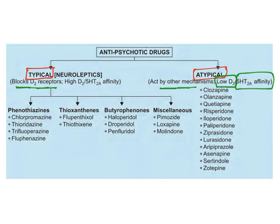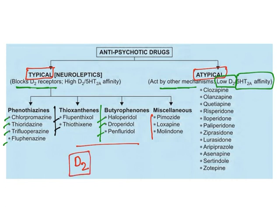Typical antipsychotics are classified as: phenothiazines — chlorpromazine, thioridazine, trifluoperazine, fluphenazine; thioxanthines — flupenthixol, thiothixene; butyrophenones — haloperidol, droperidol, penfluridol; and miscellaneous drugs — pimozide, loxapine, molindone. All these drugs block the D2 receptor, so their action is based on the dopamine hypothesis — hence they are known as typical antipsychotics.